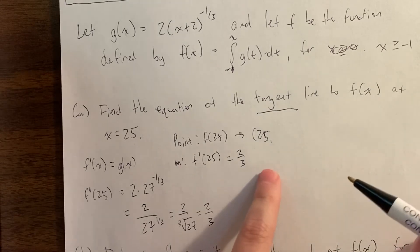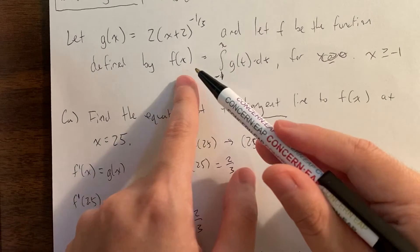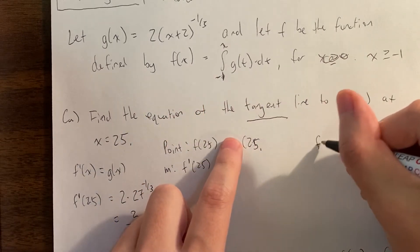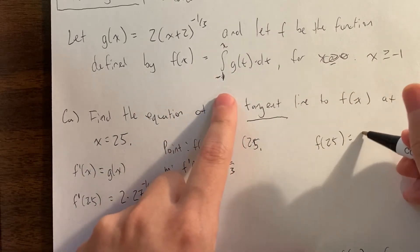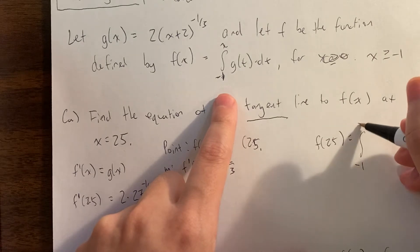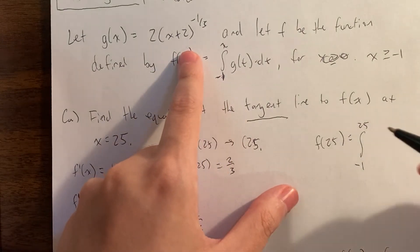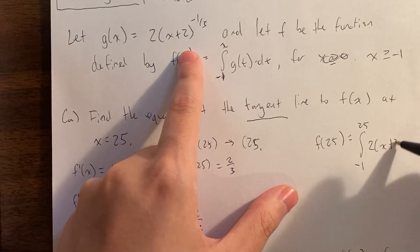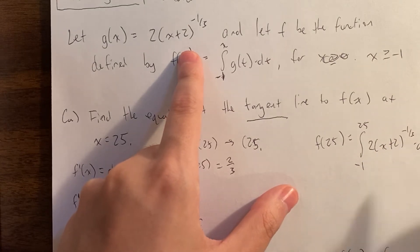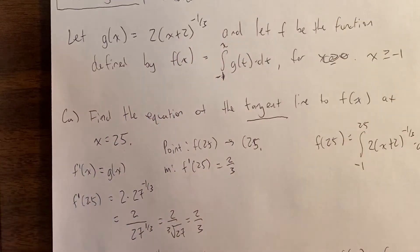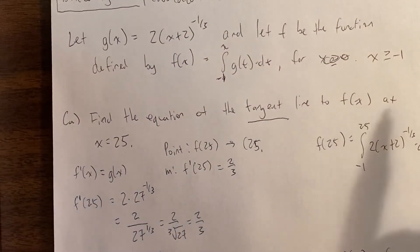Now we're ready for the point. What we're going to do is plug in 25 into this function. When we plug in 25, we actually have to do an integral. It's actually nice that it's written with a negative exponent, as opposed to written as 2 over (x+2) to the one-third — though of course that's equivalent. You would want to change it to the negative exponent form anyway, because we're about to do the power rule rather than a quotient rule.